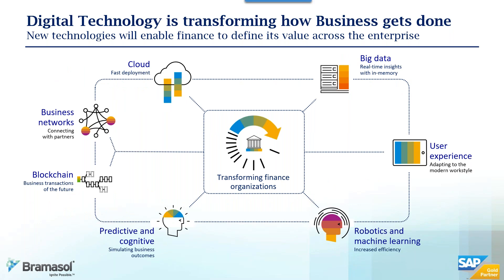User experience is increasingly important — my son was filling out his job application to Costco using his phone. It's all about making things easier and more intuitive. Robotics, machine learning, predictive and cognitive tools are key areas. Blockchain is simply one way of doing distributed architecture. Business networks are also critical — for example, treasury has a core system with input from banking, Reuters, and trading platforms. SAP and the broader world are focused on this digital network.